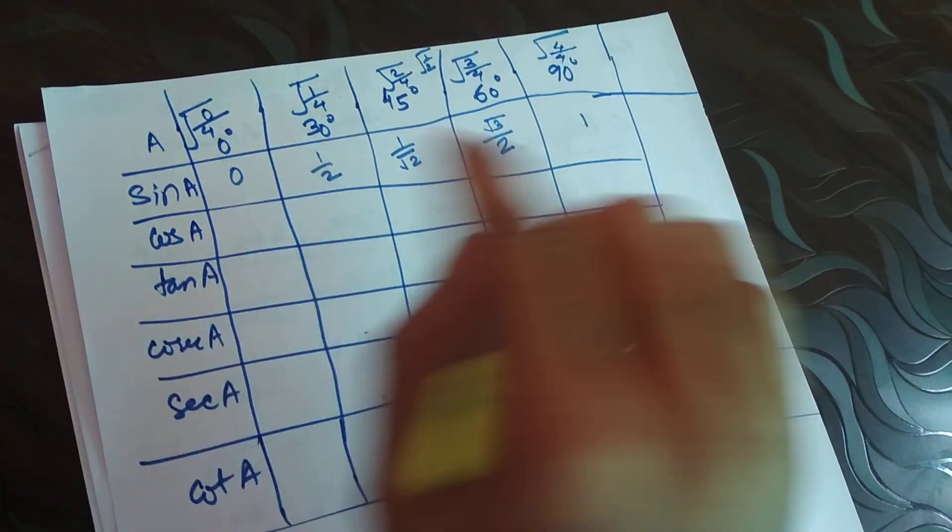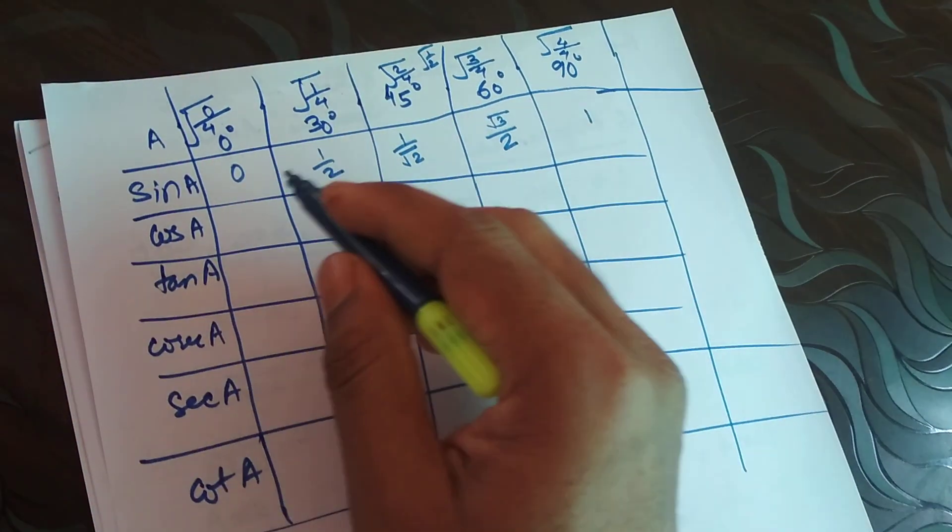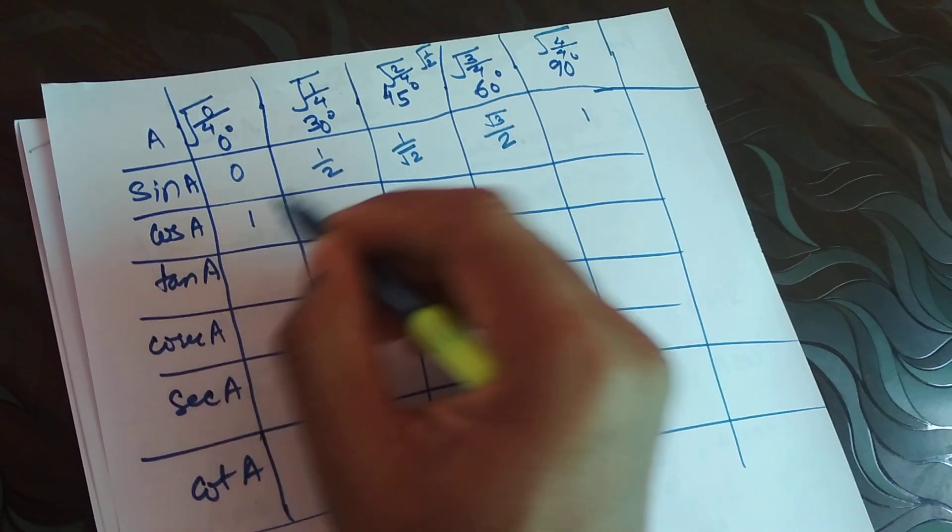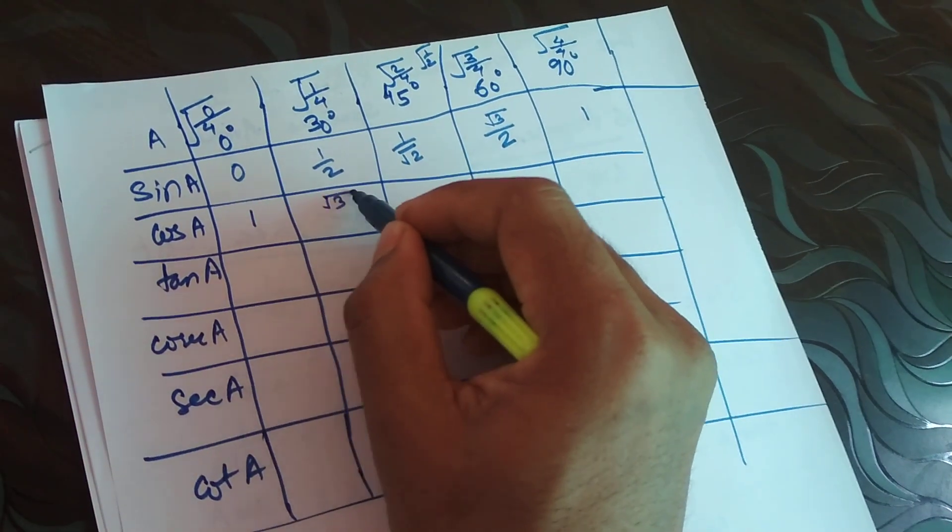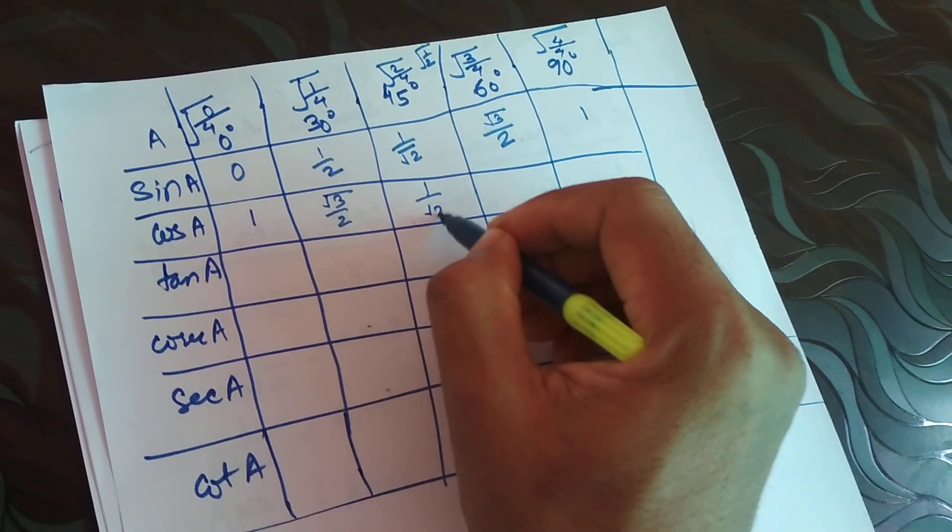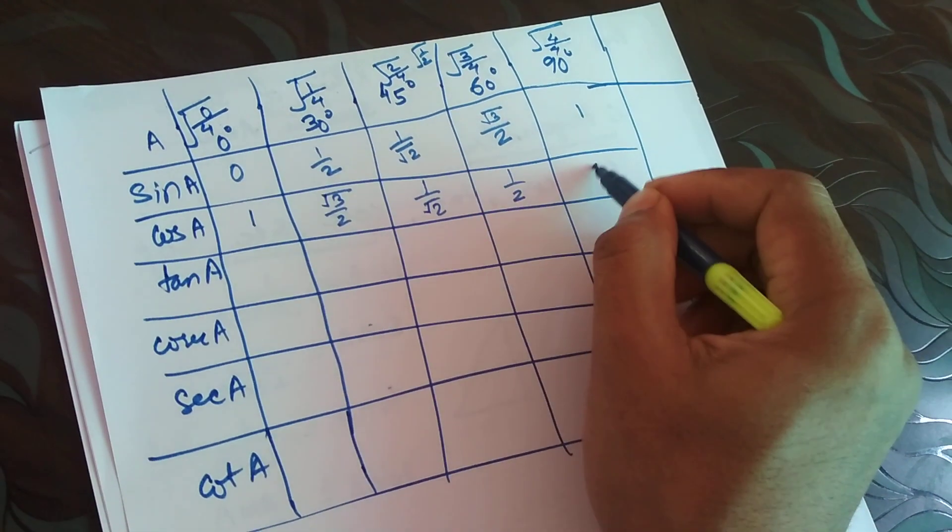Now to get the cos, we will just write it in a reverse order. 1 we will write here, root 3 by 2 we will write it in reverse order, 1 by root 2 here, 1 by 2, and 0.